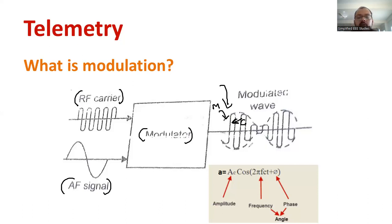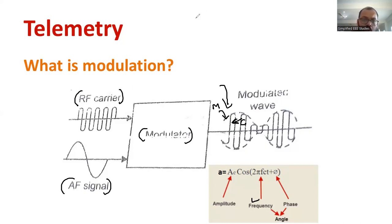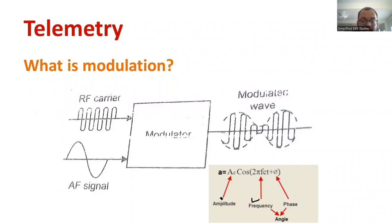Generally, we can write the output as a function: A equals Ac cosine of (2π fc t + φ). Here, the small letter f represents the frequency, Ac represents the amplitude, A is the function that changes with respect to time, and φ is the phase angle difference. This block diagram gives a brief overview of what modulation is, how modulation takes place, what a modulator is, and the general equation of modulation. It is a sinusoidal or cosine function — a periodic function.